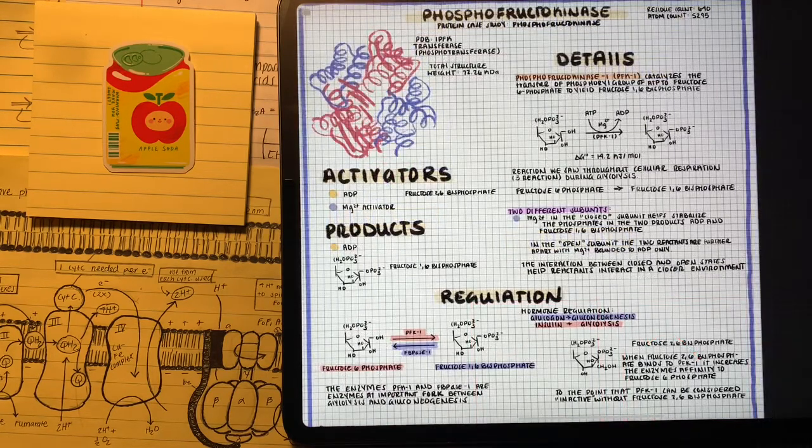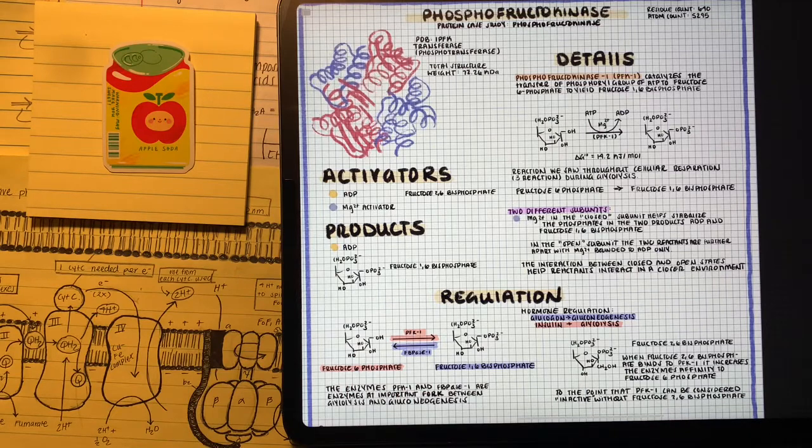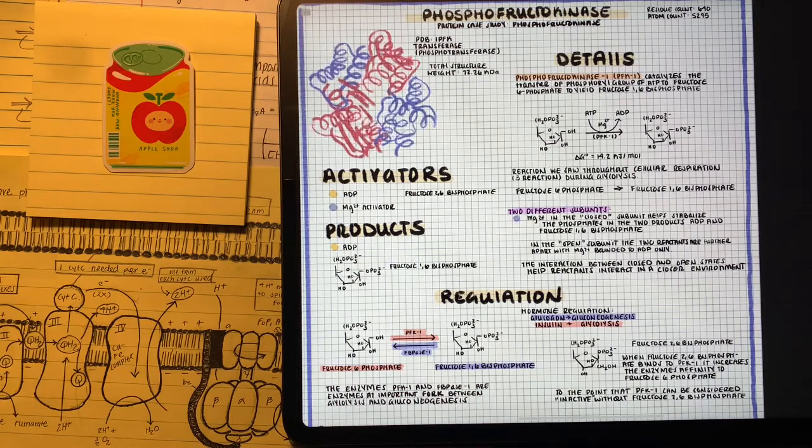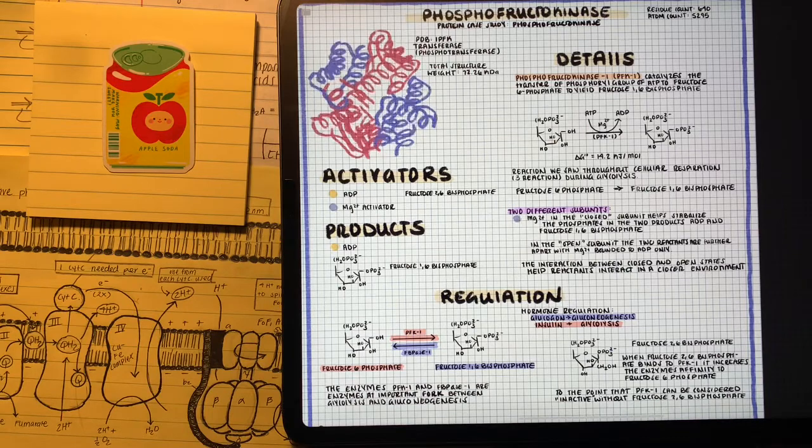Even though all these enzyme complexes are really important, I'd put a little star next to phosphofructokinase because it's an enzyme complex in regulation between glycolysis and gluconeogenesis that we're going to be seeing a lot. Phosphofructokinase takes fructose 6-phosphate and phosphorylates it again to make fructose 1,6-bisphosphate, phosphorylating the first carbon on fructose 6-phosphate.